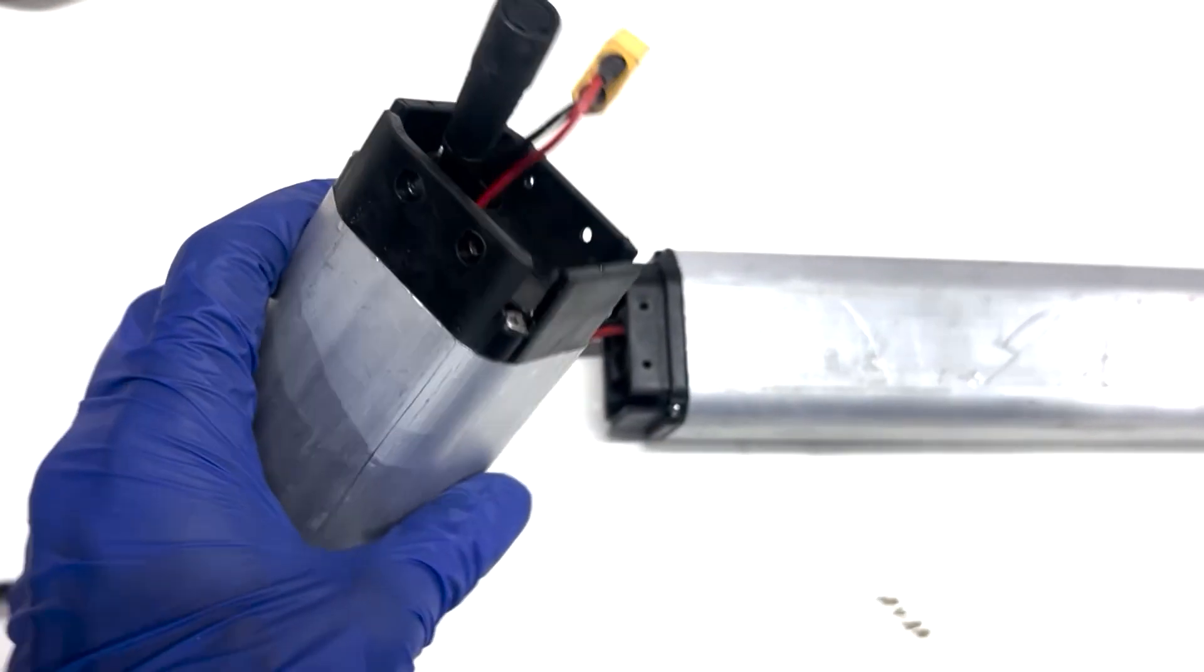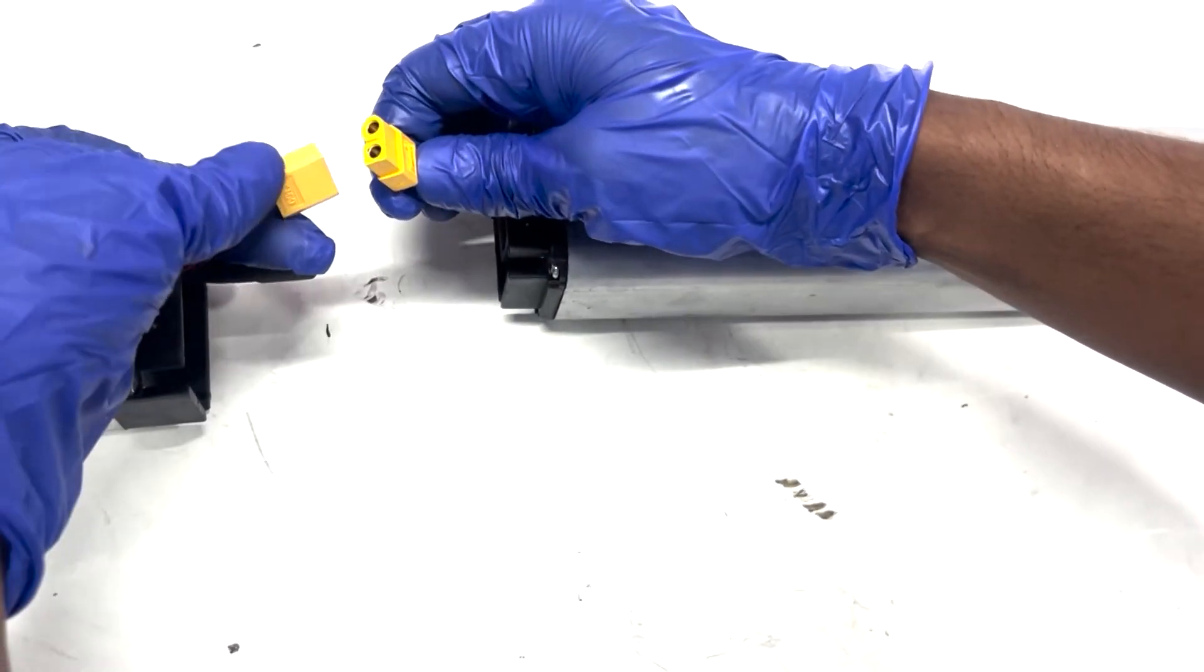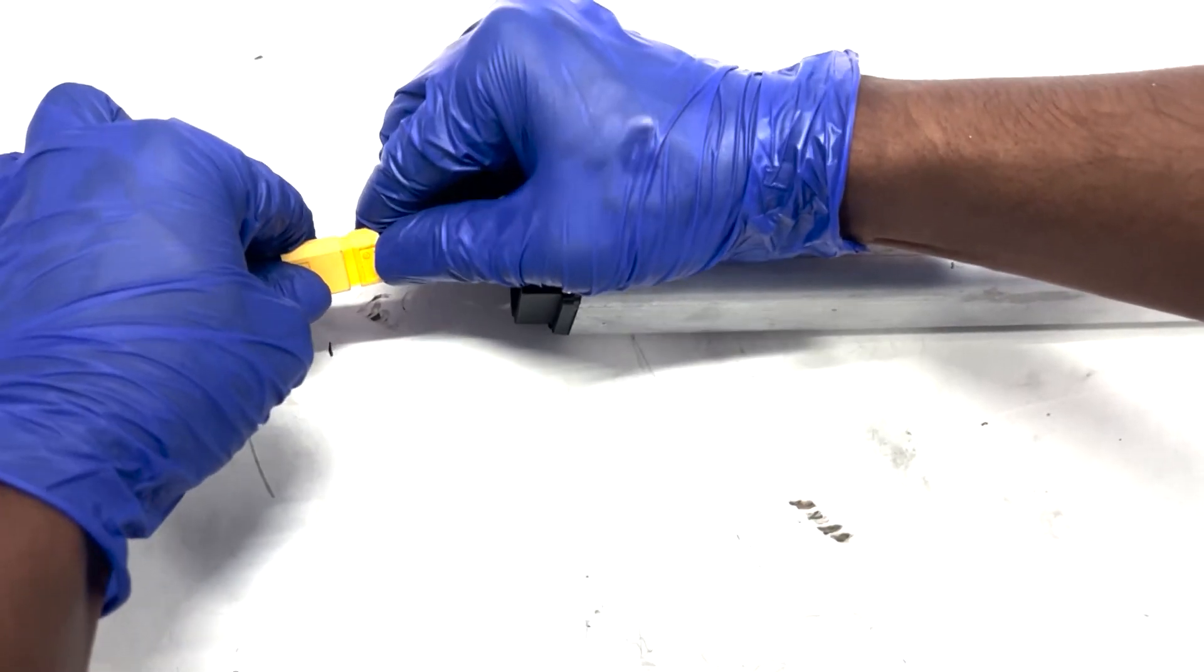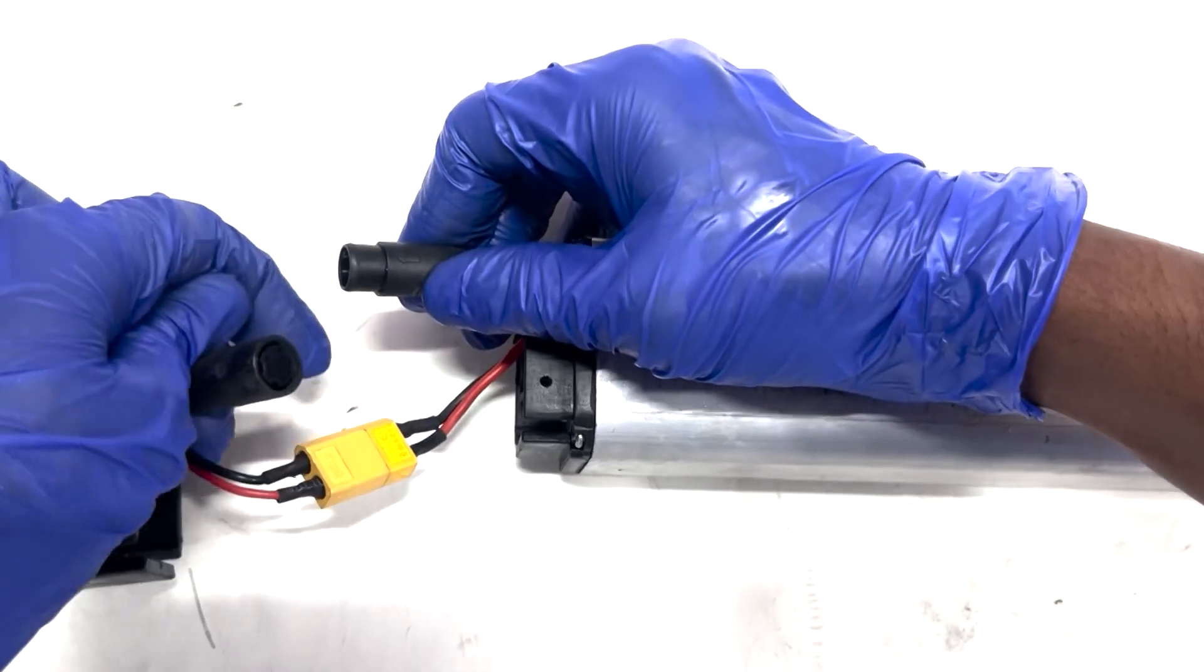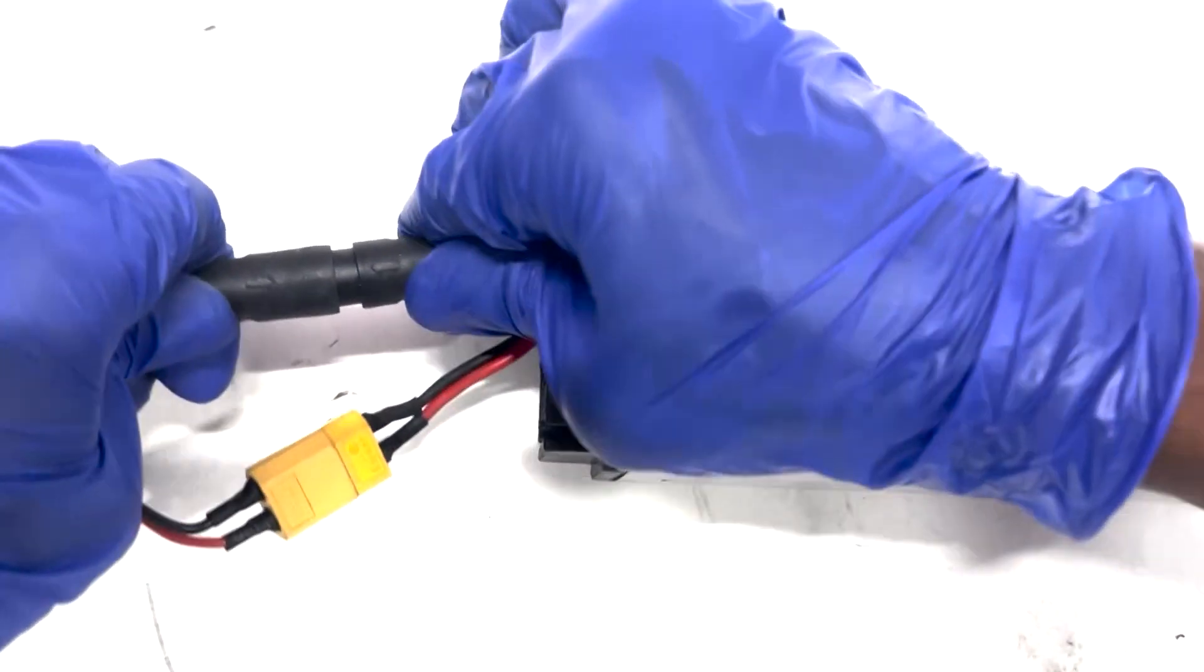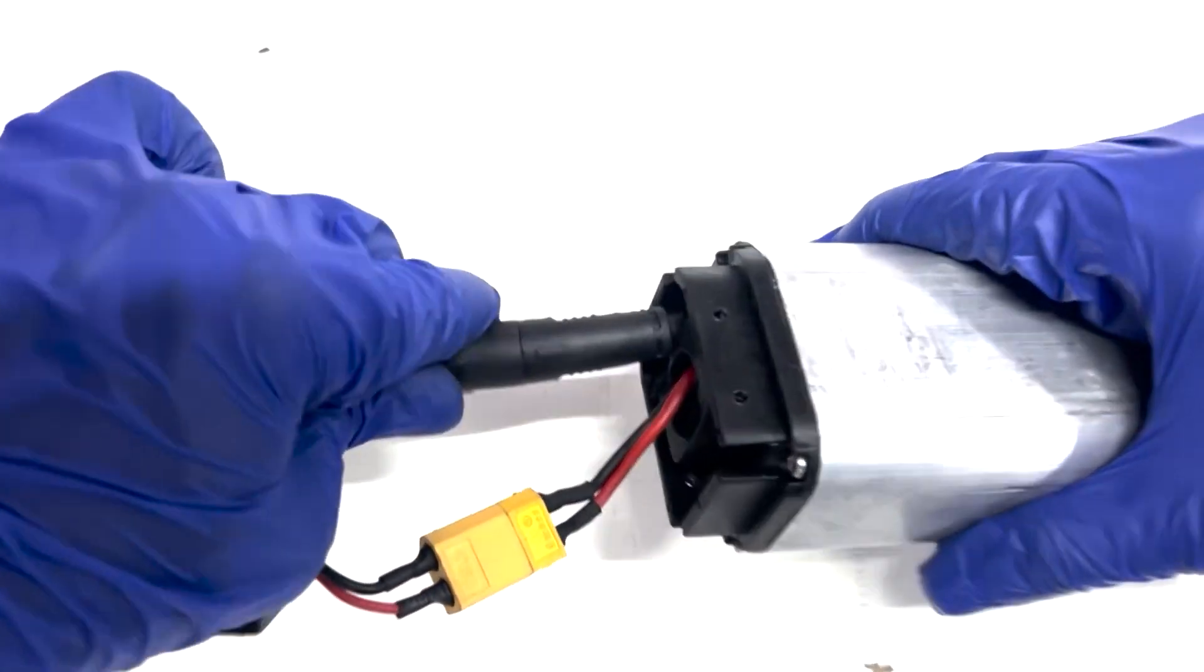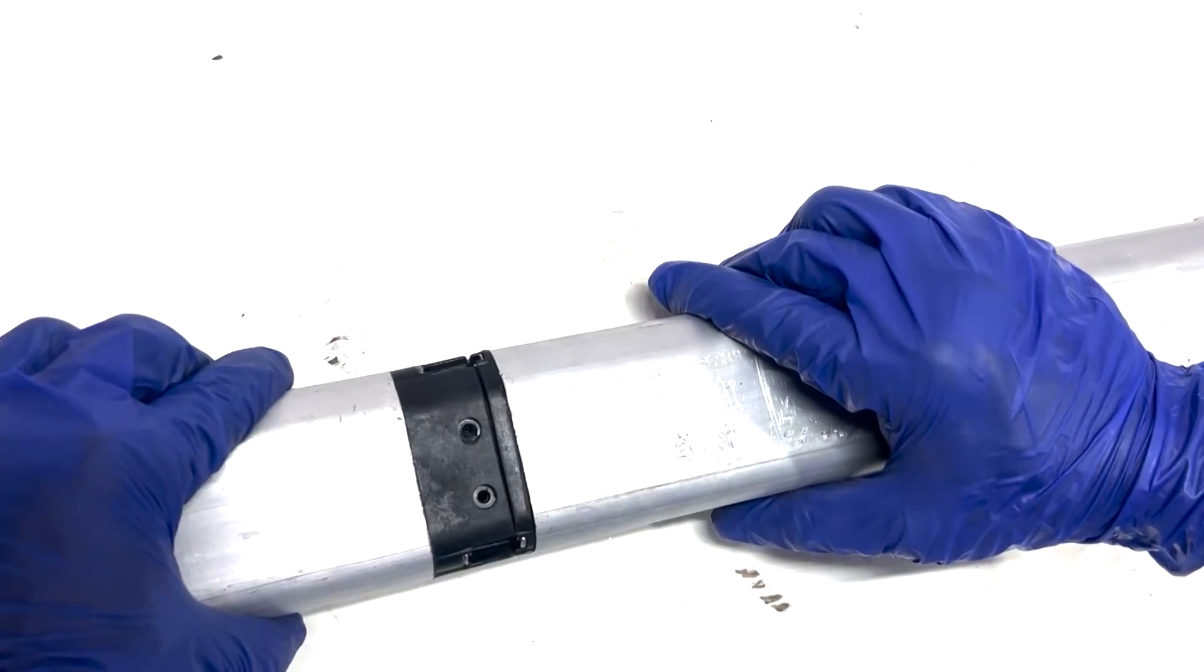Now that the old controller is removed, install the new one by connecting the yellow connector and the 13-pin harness. Align the holes and mount the screws to make a single assembly.